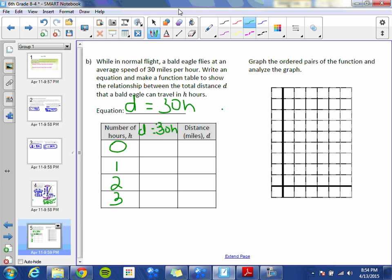In the center, we're going to plug in our h values. So d equals 30 times 0, and I'm going to go over the boxes a little bit, but that's okay. 30 times 0 is 0. And the next one, d equals 30 times 1, which is 30. D equals 30 times 2, which is 60. And d equals 30 times 3, which is 90.